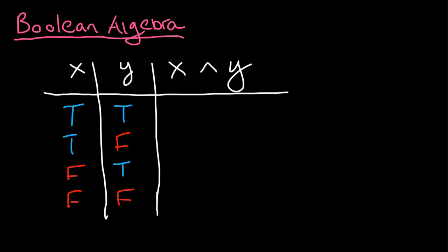Today we're going to look at Boolean algebra for our discrete math. If you've ever done anything with computer science, you're probably familiar with the word Booleans. We use those for our trues and our falses, and that's going to apply to our discrete math, because we've been doing a lot of wondering about if statements are true or false. So what if we have a statement X and a statement Y, and they can either be true or false?